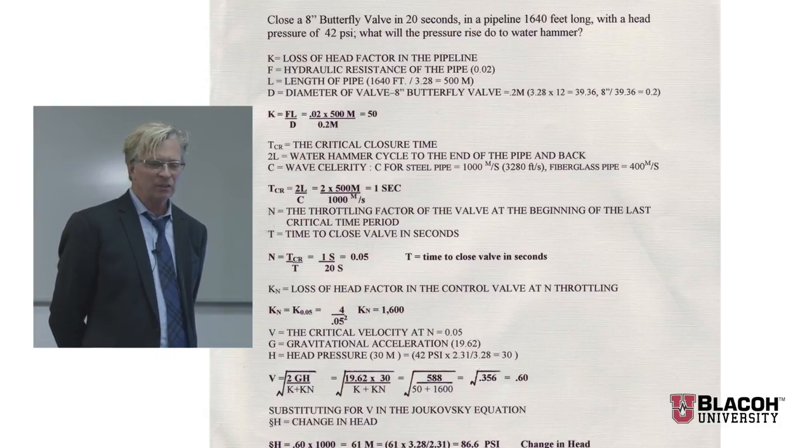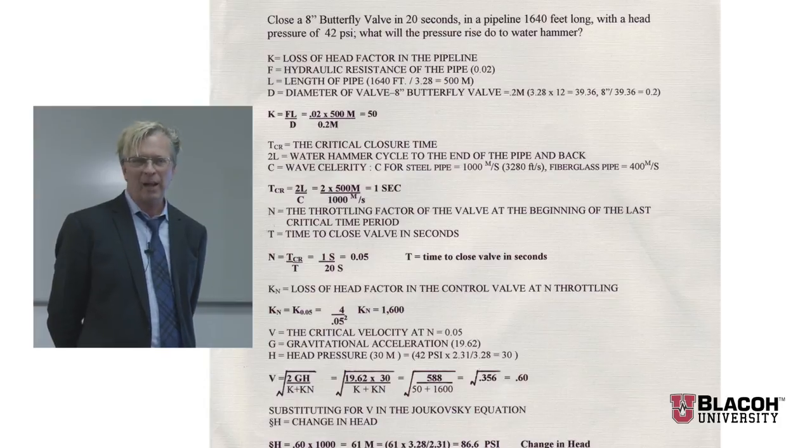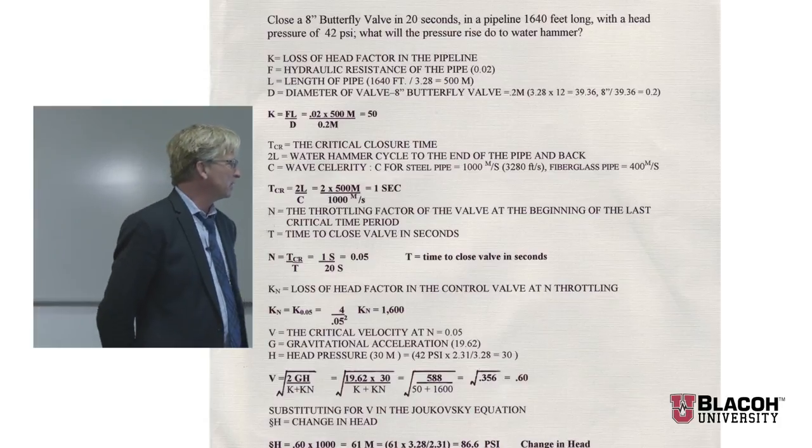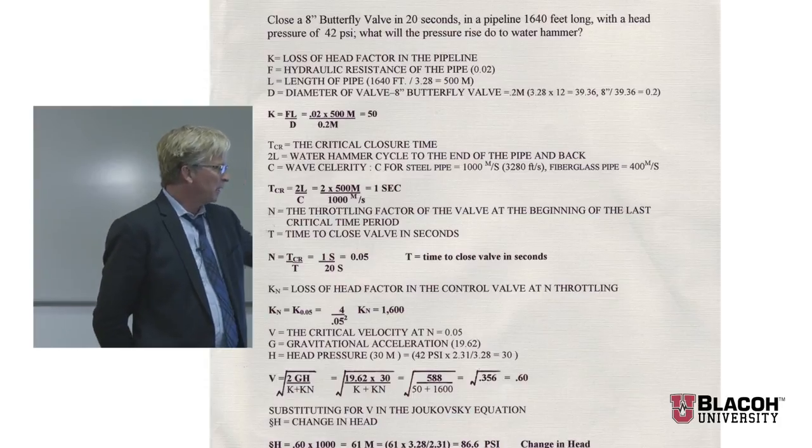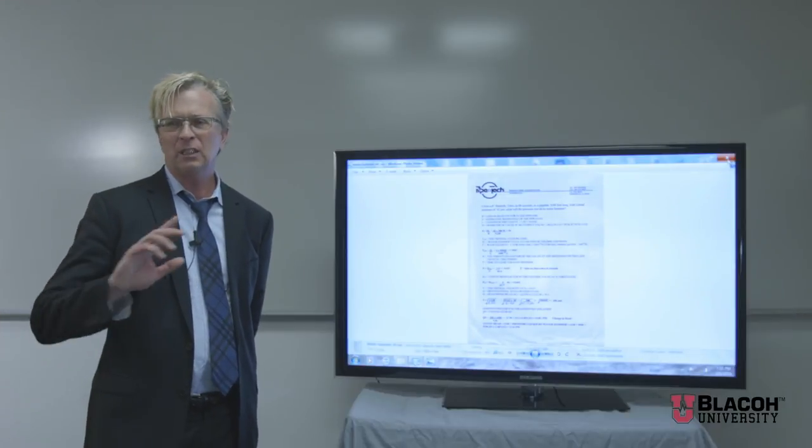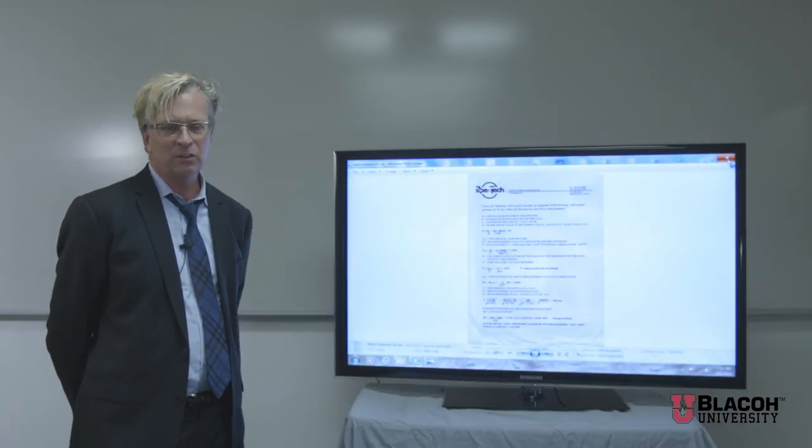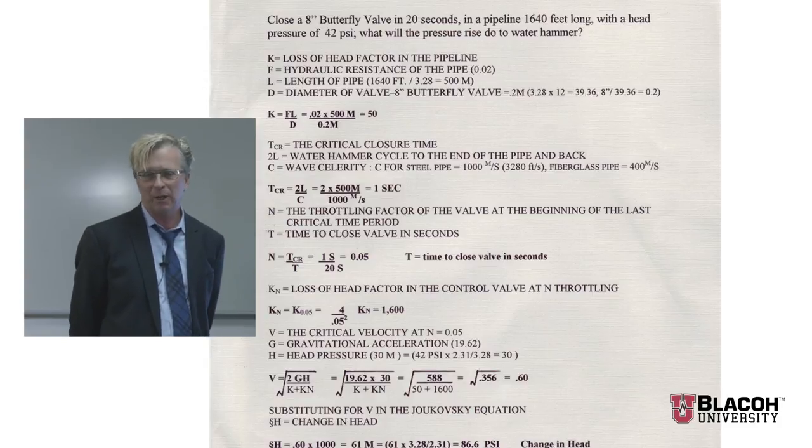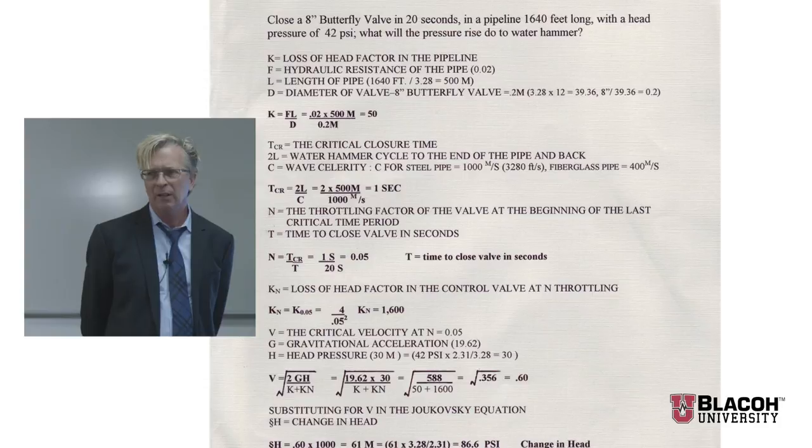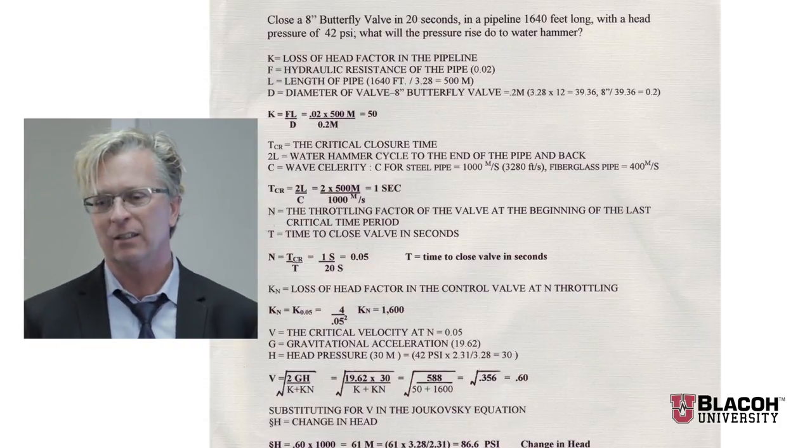To make it mathematically easy, we're dealing with a short run of pipe, 1640 feet long, 8-inch pipe. That wave oscillates out 1640 feet and back 1640 feet. We calculate the loss of head factor, hydraulic resistance, length of pipe, diameter to get our K factor. The critical closure time of the valve is that wave frequency traveling through the piping system, calculated as 2 times the length divided by the celerity of the wave. In this example we're using Schedule 40 pipe, 8-inch, with wave speed of 3280 feet per second.